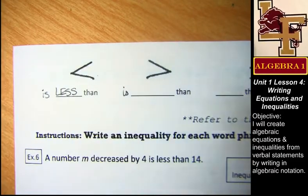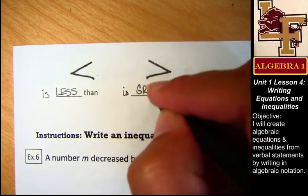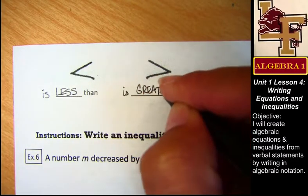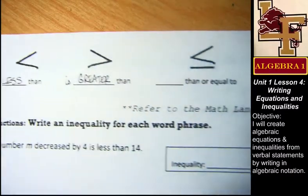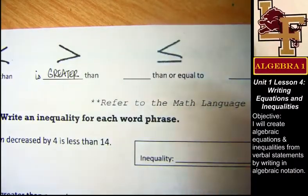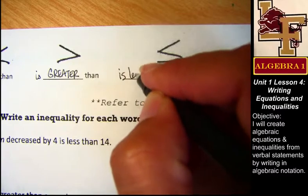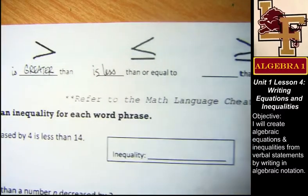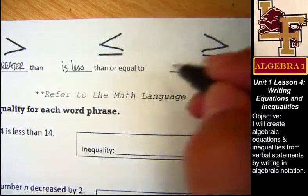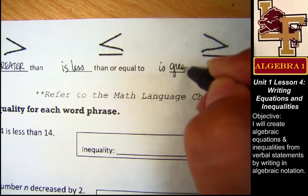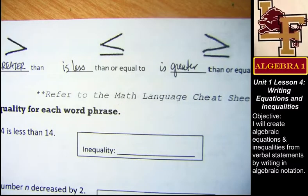What does this symbol mean? Greater. Good. Is greater than. And this symbol? Is less than or equal to. And this one? Is greater than or equal to. Beautiful. You guys are champions at that.